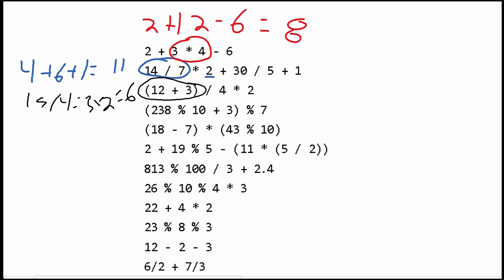Next, we are going to look at 238 modulus 10, which gives us 8. Then we add 3 to it because it's in parentheses, which gives us 11. And we take the modulus of that, which gives us 4. So 4 is our answer here.